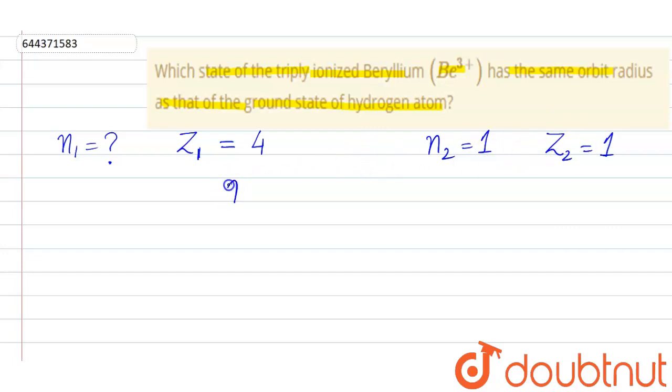Now we know the formula for radius is Rₙ equals to A₀ N² by Z. So, this implies that radius is directly proportional to N² by Z.